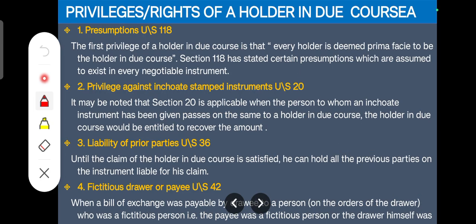There are privileges given to holder in due course that are not given to a holder. First is the presumption under Section 118. There are certain presumptions — the court presumes these things. Every holder is deemed to be a holder in due course. When you are a holder and there is no doubt against you, you will be considered a holder in due course. If any other person has a doubt, he or she can prove it in court; otherwise, the court will not ask for clarifications and will consider you to be a holder in due course.